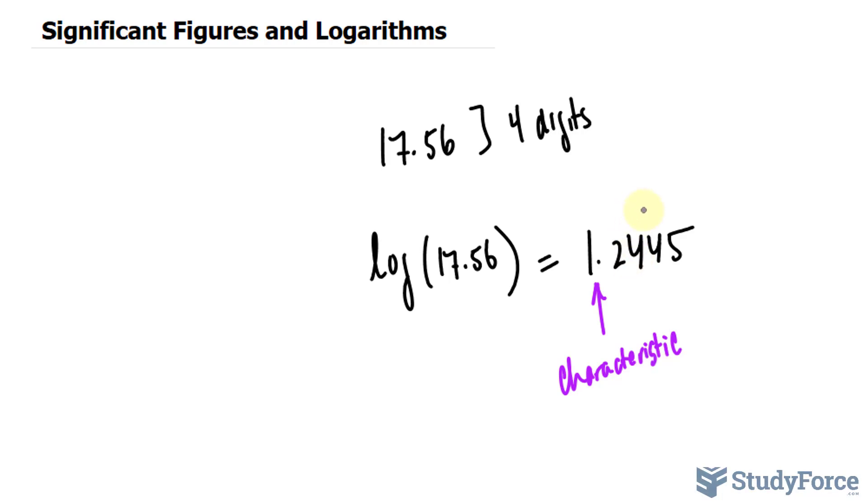and this part is referred to as the mantissa. And in total, it has four significant figures. We do not count the characteristic as a significant figure.